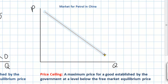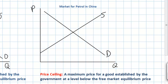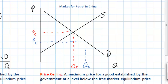We'll start with our downward sloping demand curve and our upward sloping supply curve. We'll label these S and D and identify the free market equilibrium price for petrol in China of PE and the free market equilibrium quantity of QE. If the government imposes a maximum price below equilibrium, let's choose a price here and call this PC for the price ceiling. At this lower price, the quantity demanded of petrol in China will increase to QD, while the lower price creates an incentive for petrol producers to reduce the quantity they supply from QE to QS.